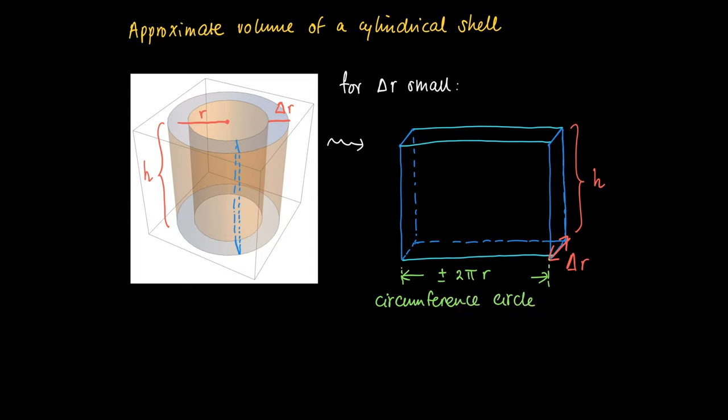And if delta r is small enough, then the inner circumference is almost the same as the outer circumference. So the approximate volume of this box, if we take just this box of 2pi r by delta r and height h, then we get as a volume h times 2pi r times delta r.